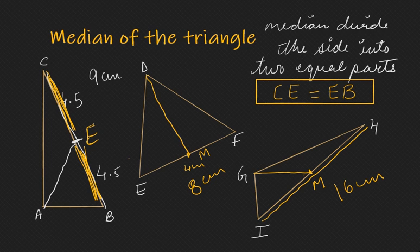So the line segment joining the midpoint of other sides opposite to the vertex is called as the median of triangle.